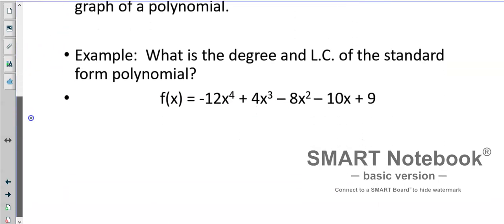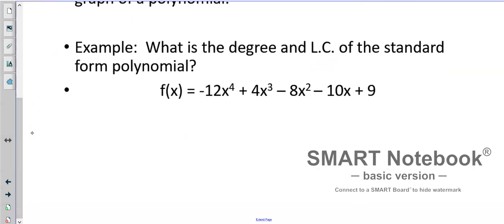All right? There are two characteristics of the function that directly determine the shape of the graph of the polynomial. So example, what is the degree and LC of the standard form polynomial? So notice it's already in standard form, f(x) = -12x^4 + 4x^3 - 8x^2 - 10x + 9. That means this is what we're looking at. So the lead coefficient is negative 12, and the degree is the exponent, 4.